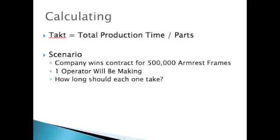Here's our scenario. Say you're at a company that wins a contract to make 500,000 armrest frames. The frames underneath your armrest in your car, underneath the fabric. They have to make these 500,000 frames in one year. You only have one operator that will be working in the production cell. Your manager wants to know, how long do you have to make each part? How much time should it take before a part comes out of the cell? This is takt time. It's the time per part.